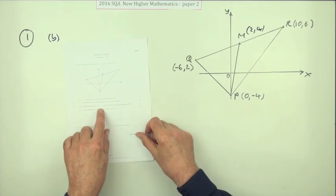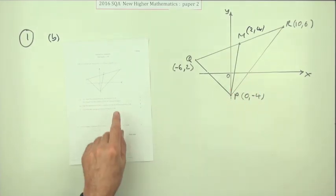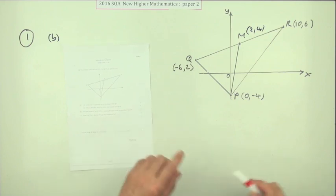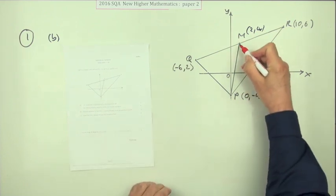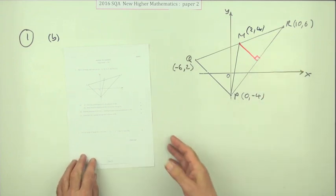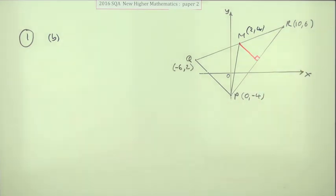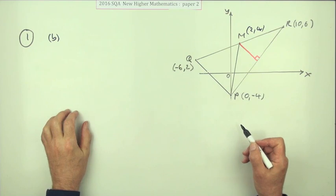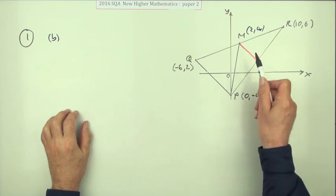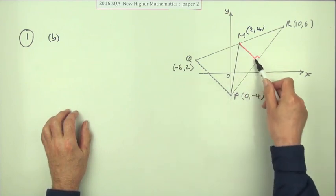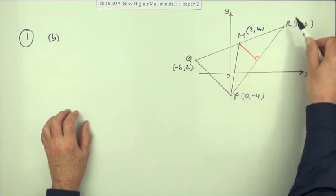In part B, find the equation of the line L passing through M and perpendicular to PR. Passing through M, perpendicular. So it's three marks here for getting the equation of that line. So to get the equation of a line, you need a point on it - got it. You need its gradient - you have to get the gradient by reference to PR.